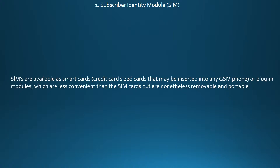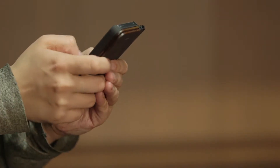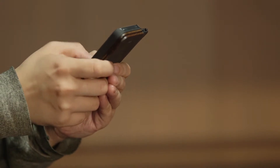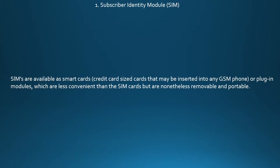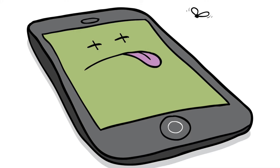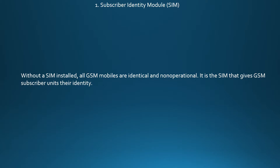SIMs are available as smart cards — credit card size cards that may be inserted into any GSM port — or plug-in modules, which are less convenient than SIM cards but are nonetheless removable and portable. Without a SIM installed, all GSM mobiles are identical and non-operational. It is the SIM that gives GSM subscriber units their identity.